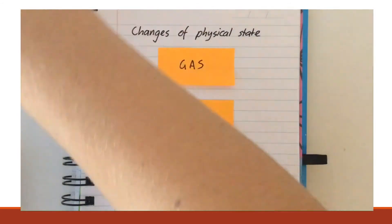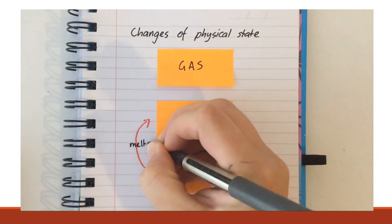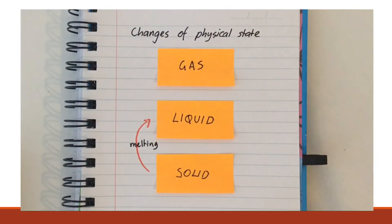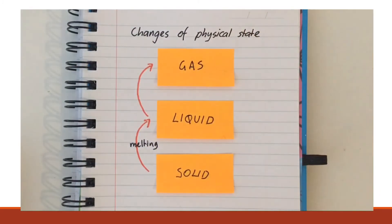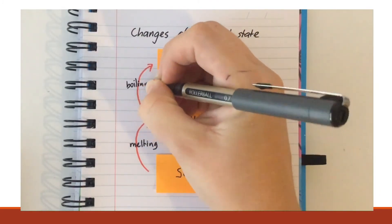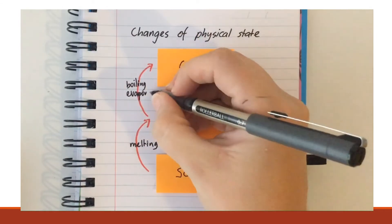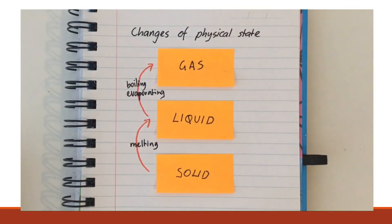When heat is added to a solid, the particles will move faster and generally melt to form a liquid. When heat is added to a liquid, the particles will move faster and generally boil or evaporate to form a gas.